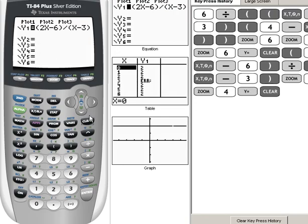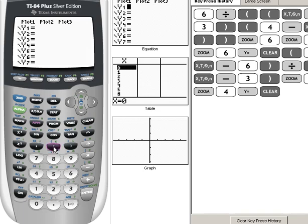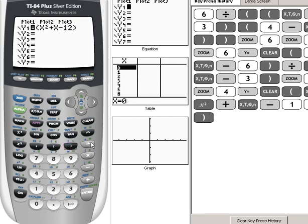And in our y equals, we're going to type in our original function, x squared plus x minus 12 divided by x squared minus 4.